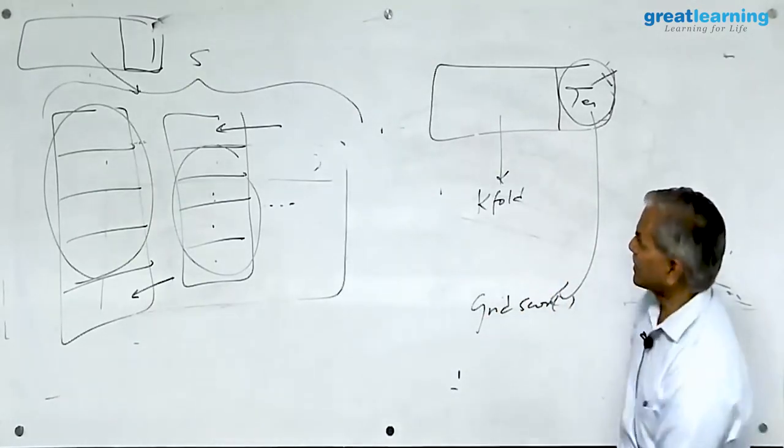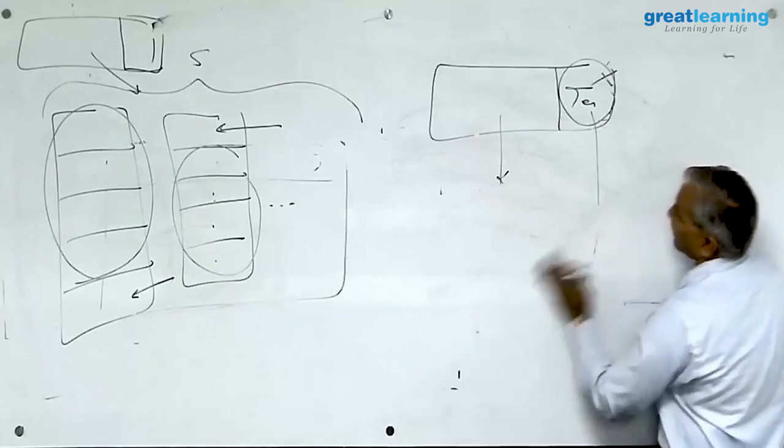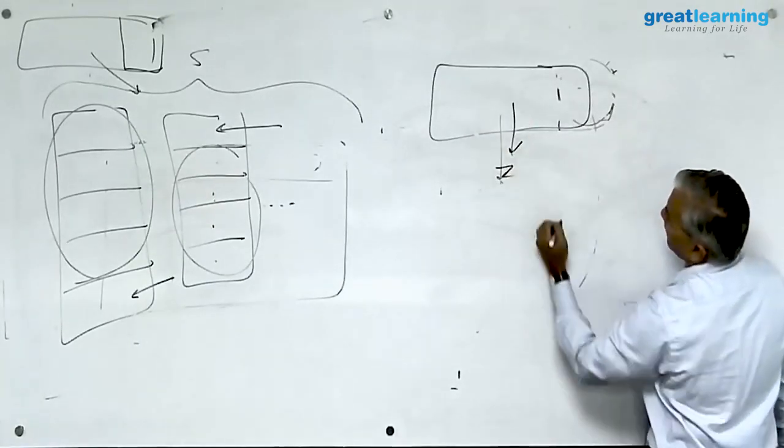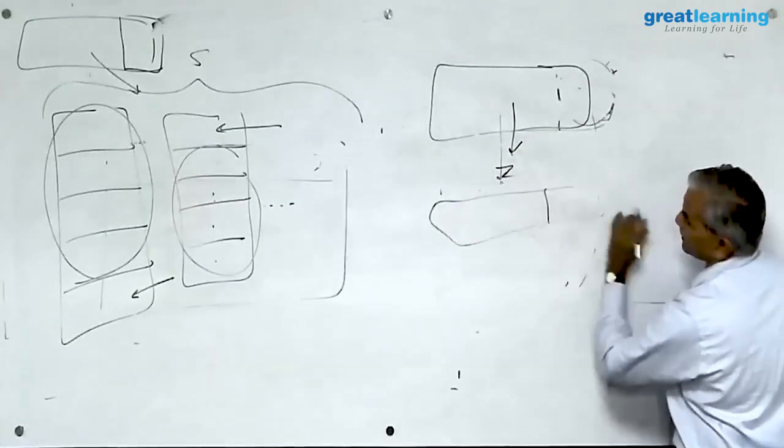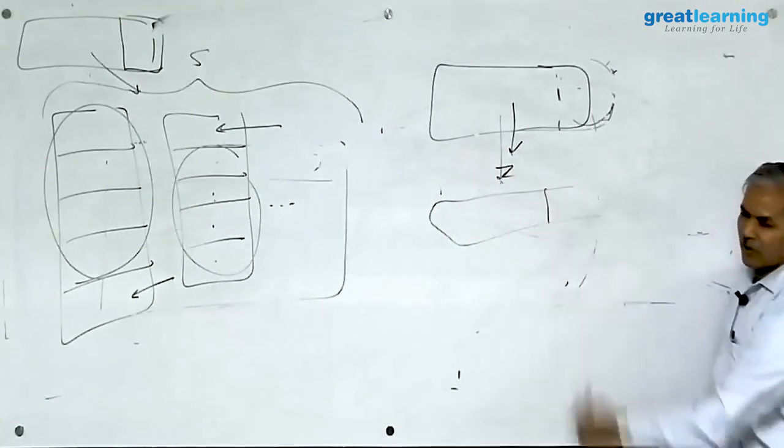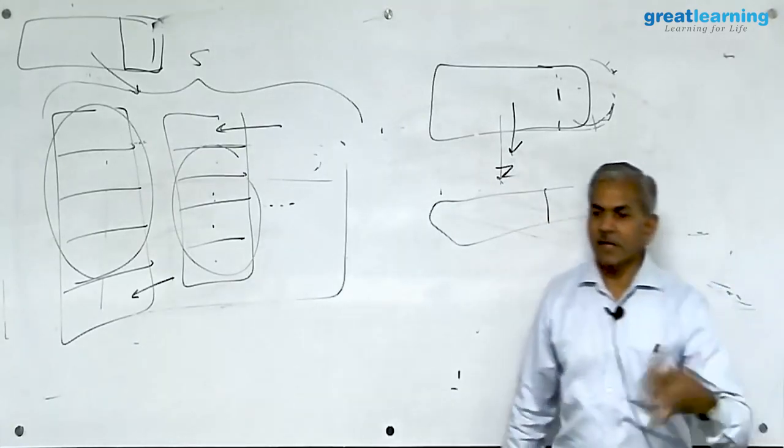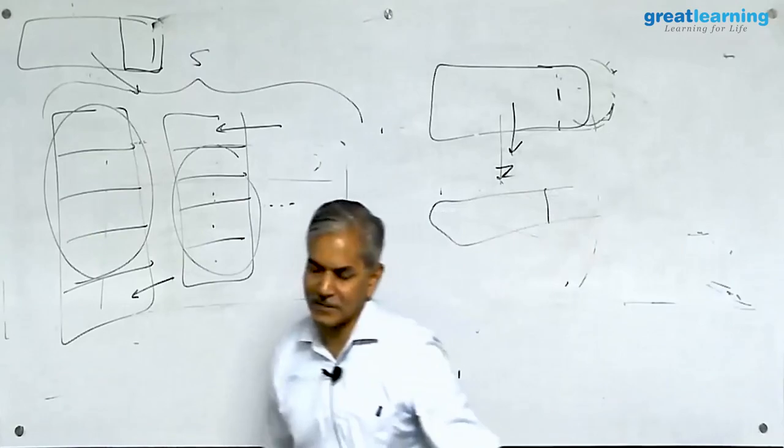Two will be z scored independent of each other. The innocent mistake that we do is, we first convert the entire data set into z score. Then we break it into test set, training set. Test set has already been influenced by training set. The test set has already been influenced by the values in the training set.